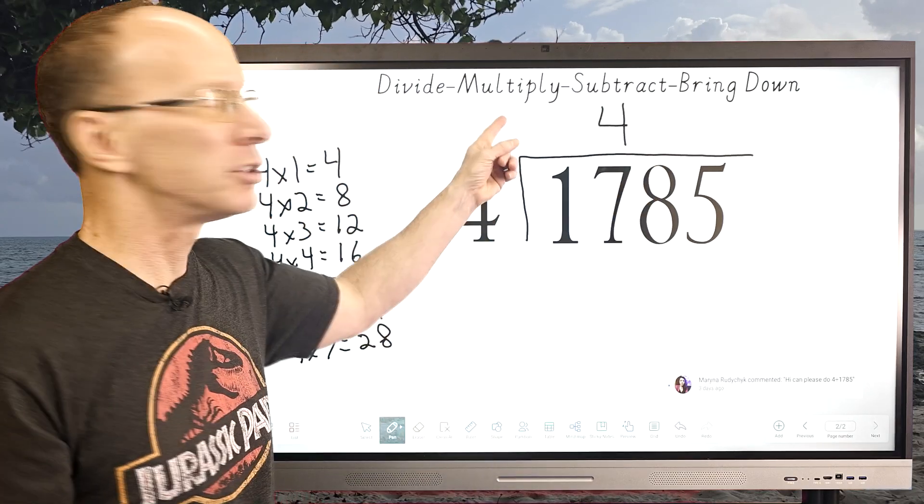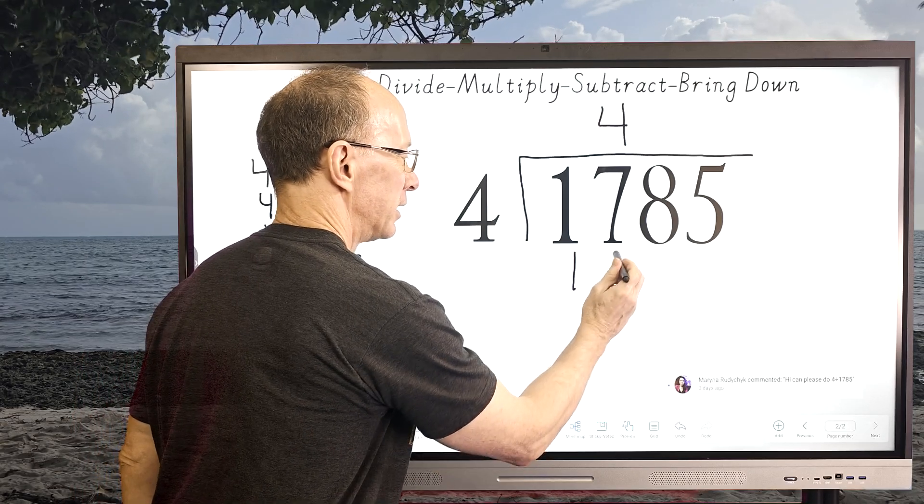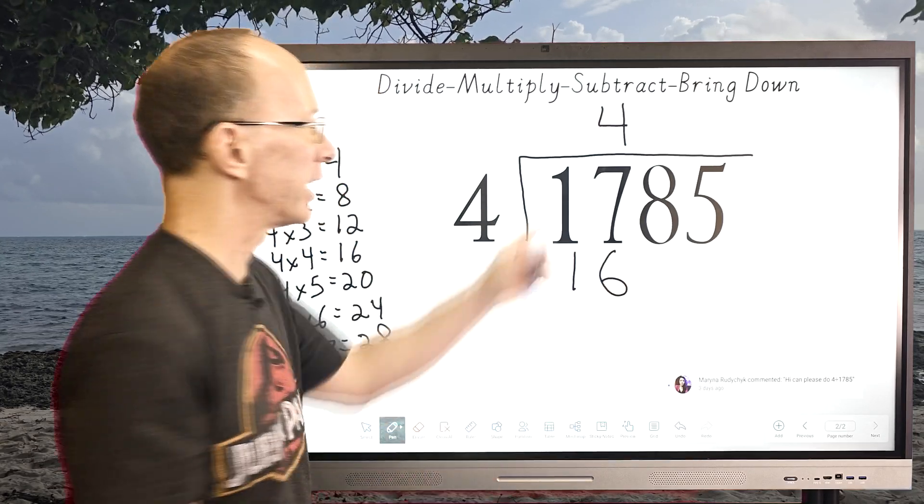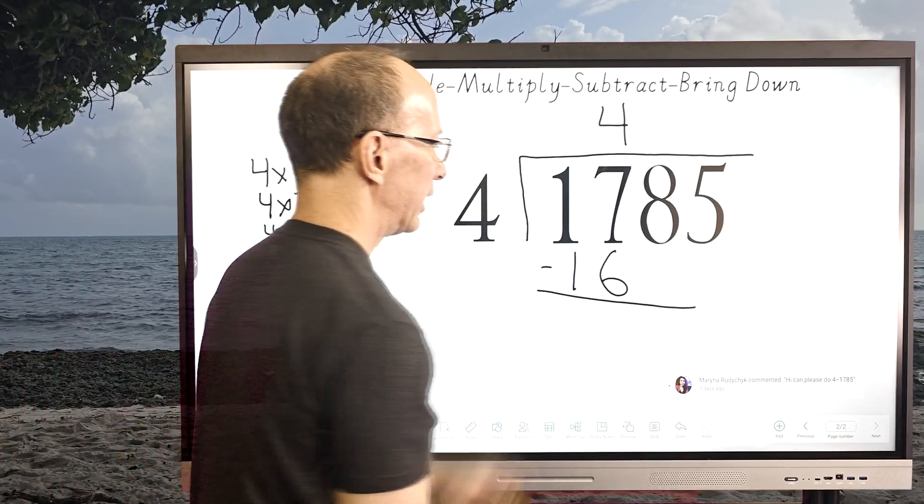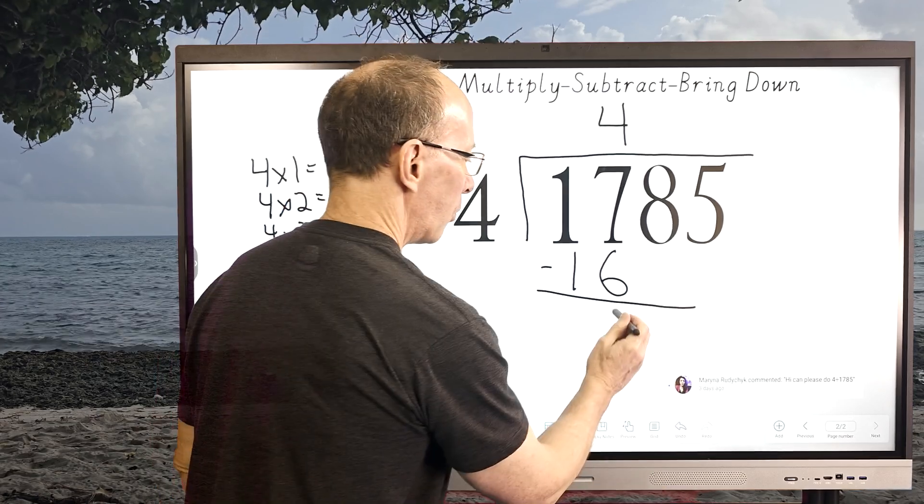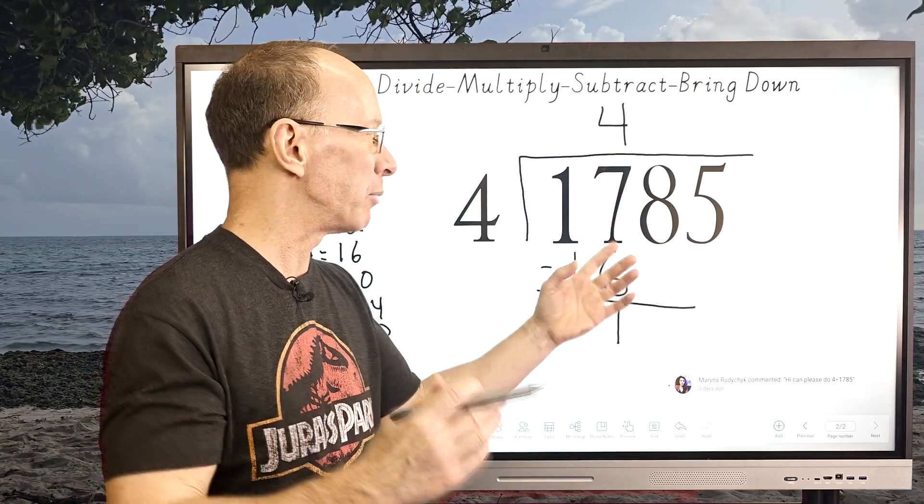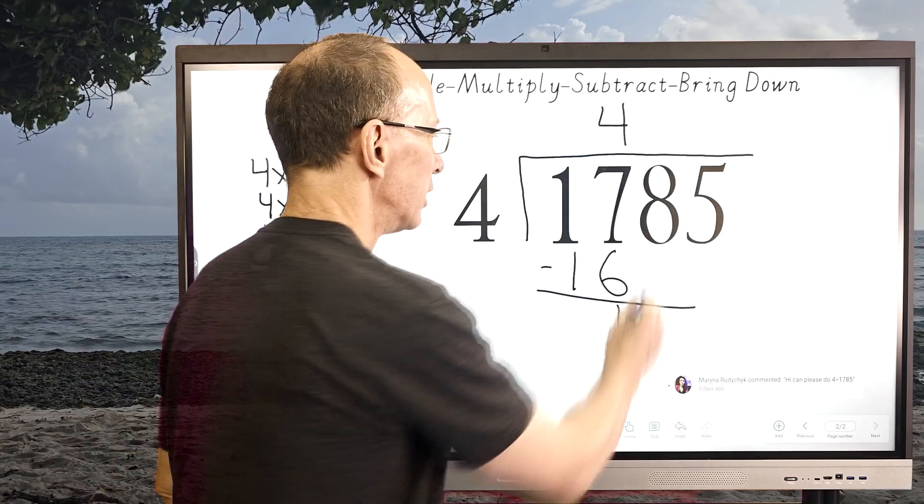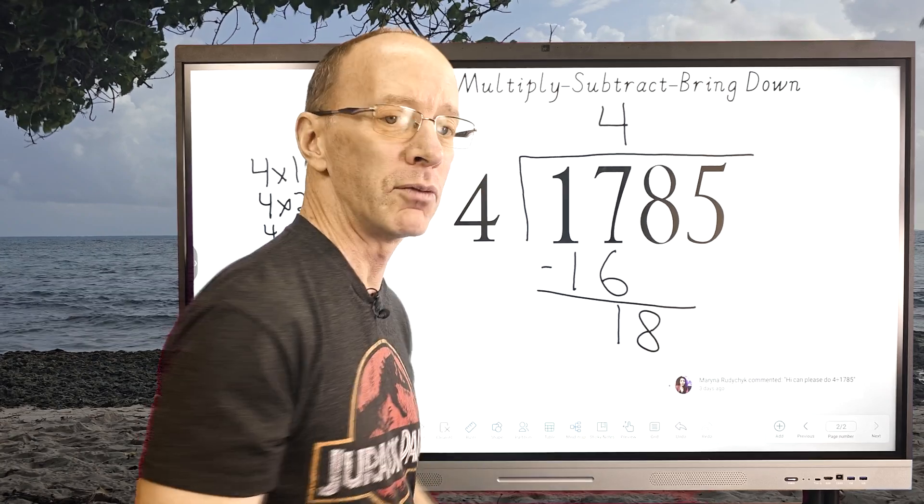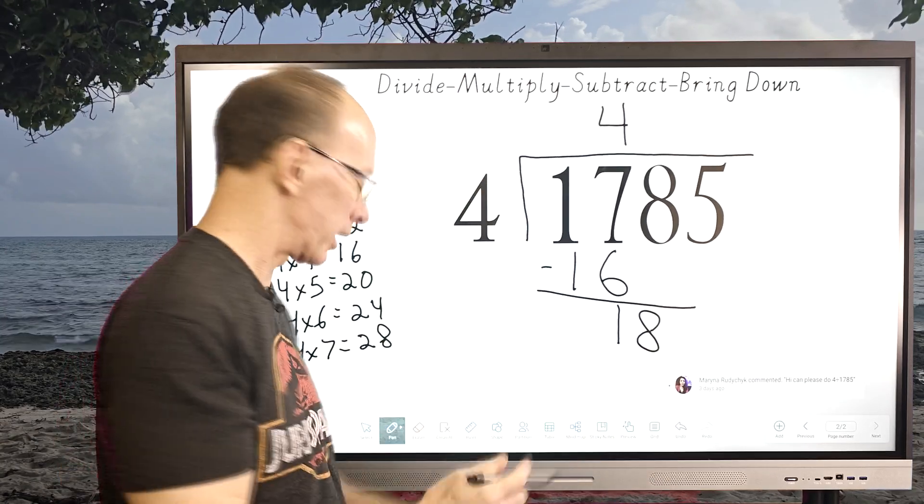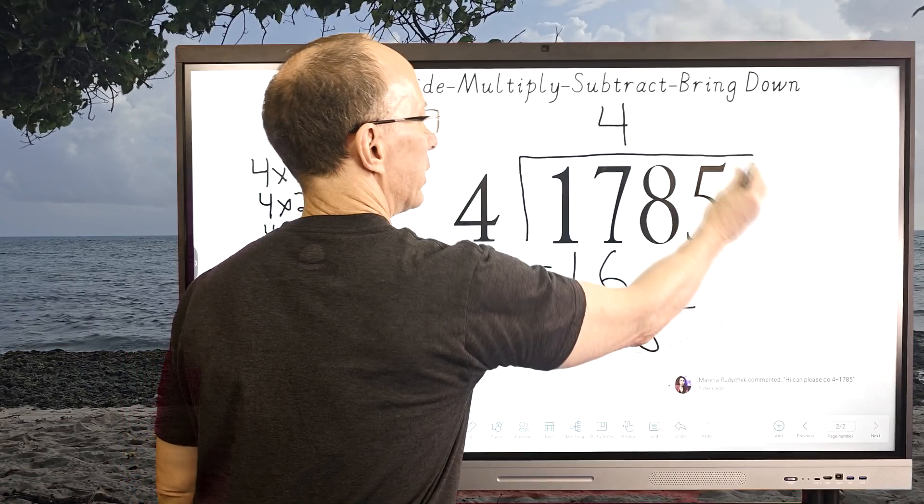Now my next step is to multiply, 4 times 4 equals 16. Then my next step is to subtract, so I'll go ahead and write the subtraction right here and then 7 minus 6 equals 1. Now my next step is to bring down, that means to bring down the next number. So I'm going to bring down 8 all the way over here and then we're going to start the whole process over again.